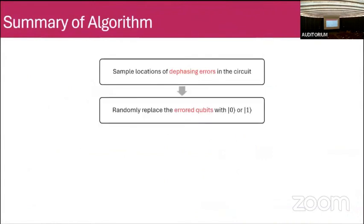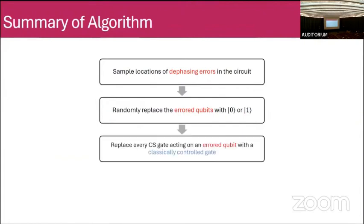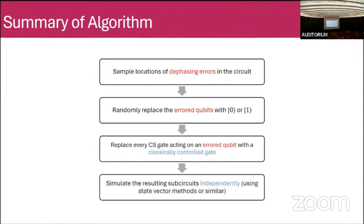To summarize the algorithm: sample locations of dephasing errors, randomly replace errored qubits with 0 or 1, replace every controlled phase gate with a classically controlled phase gate, and simulate the resulting subcircuits independently.